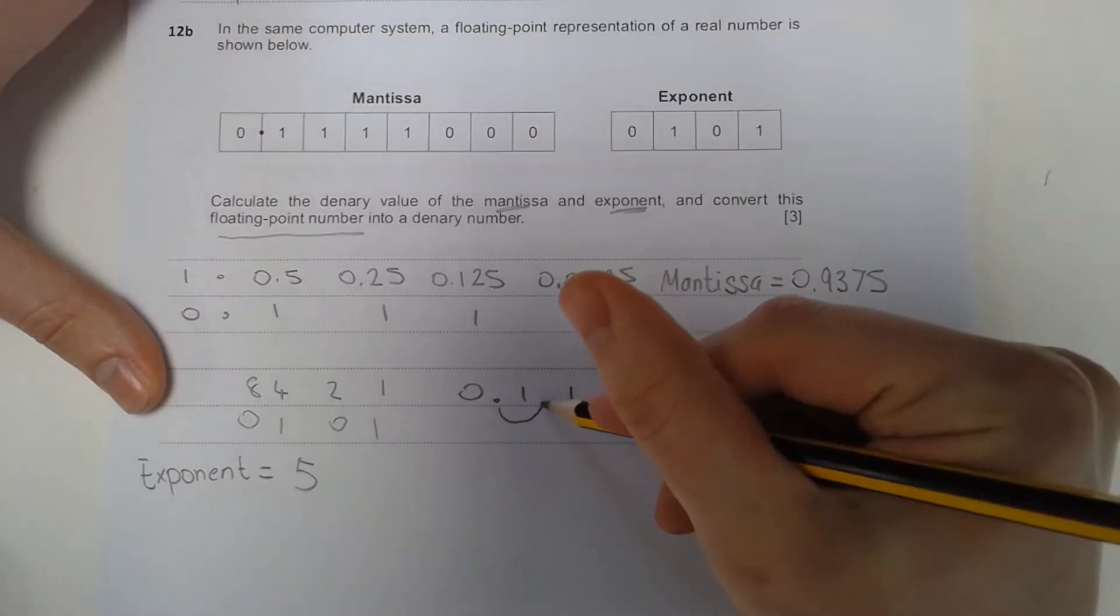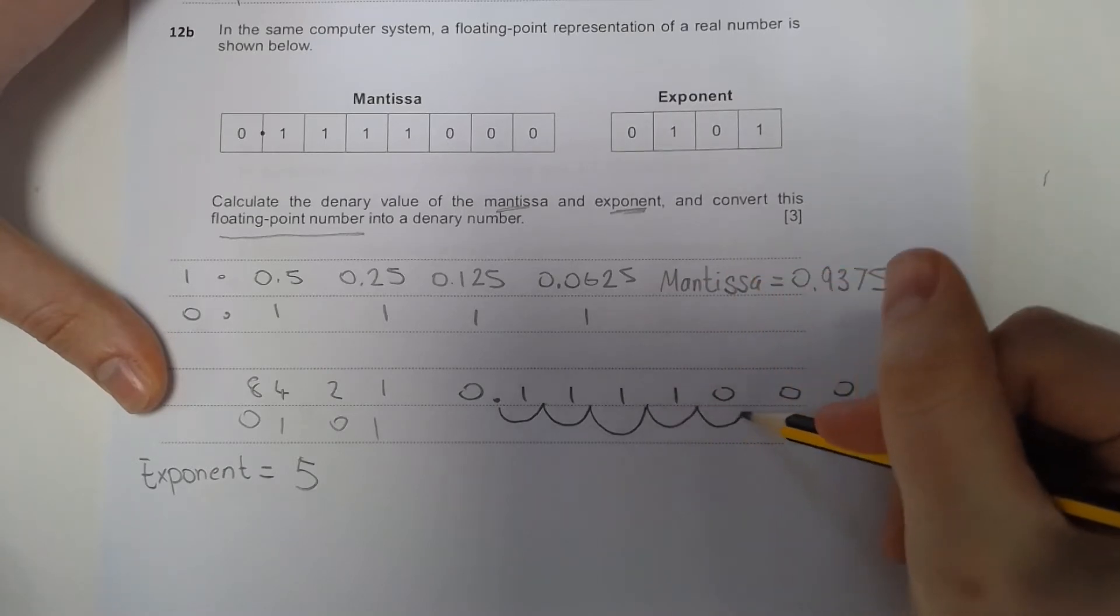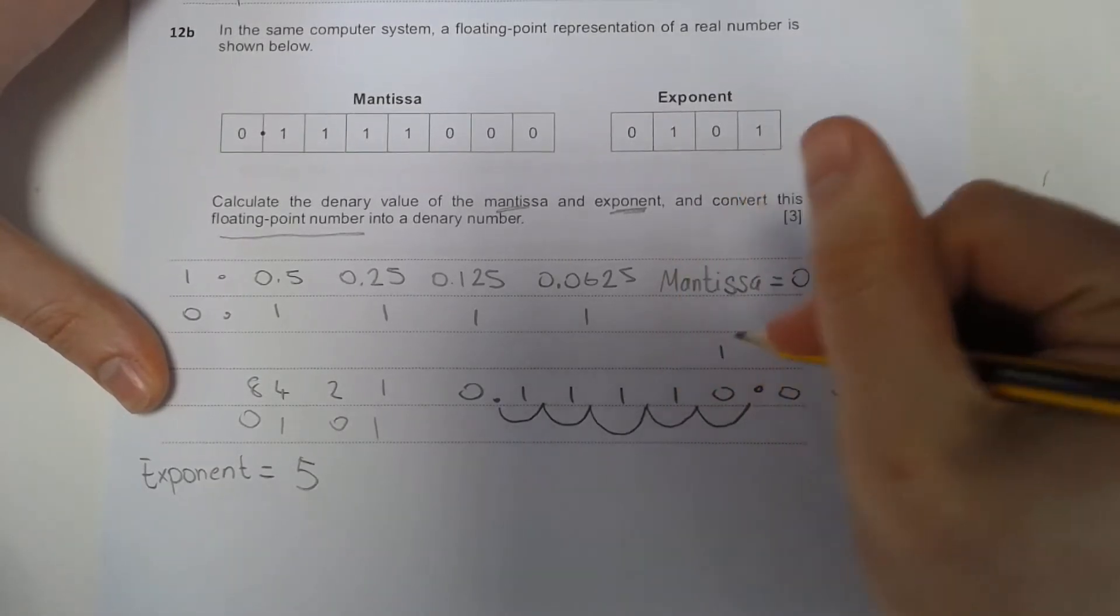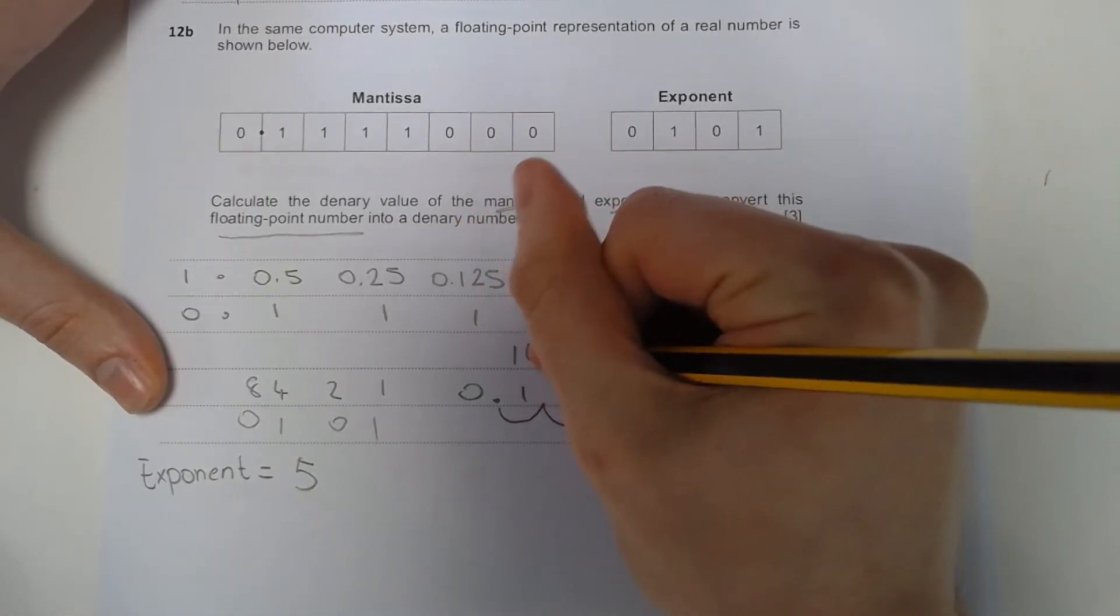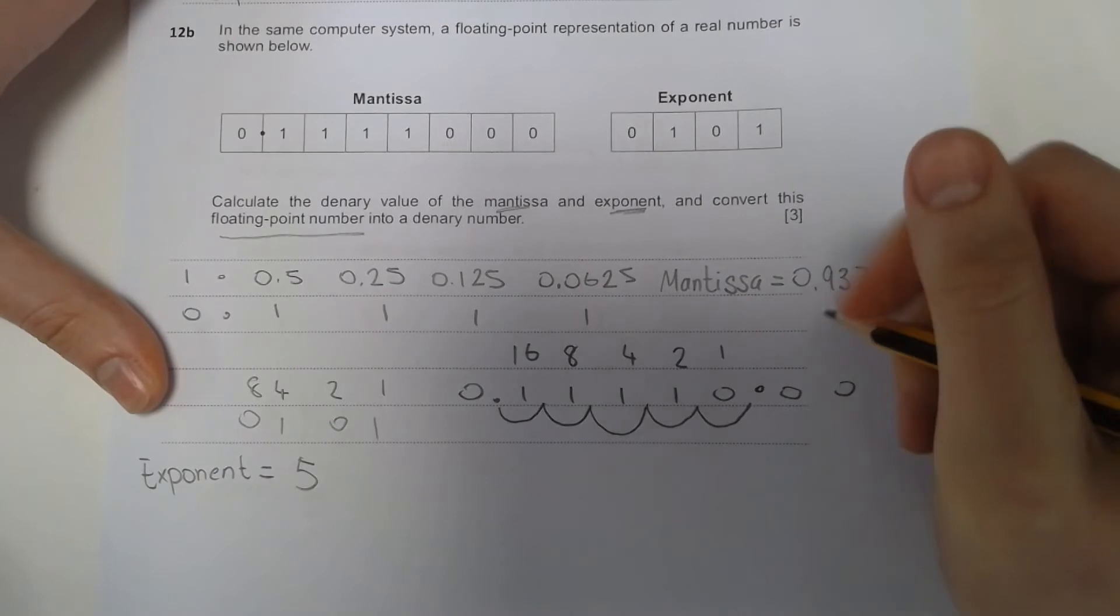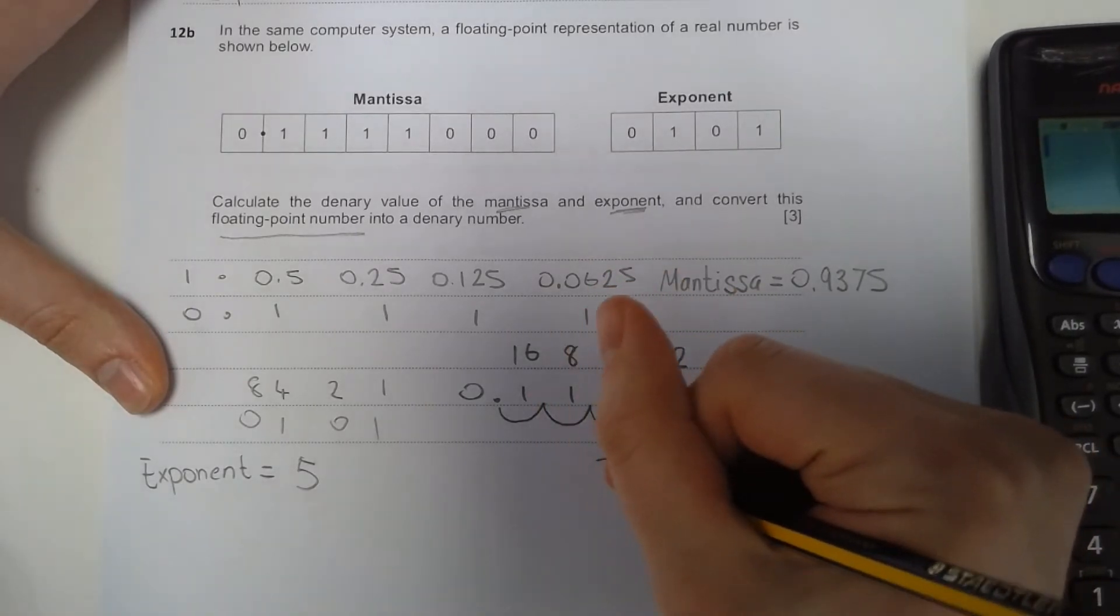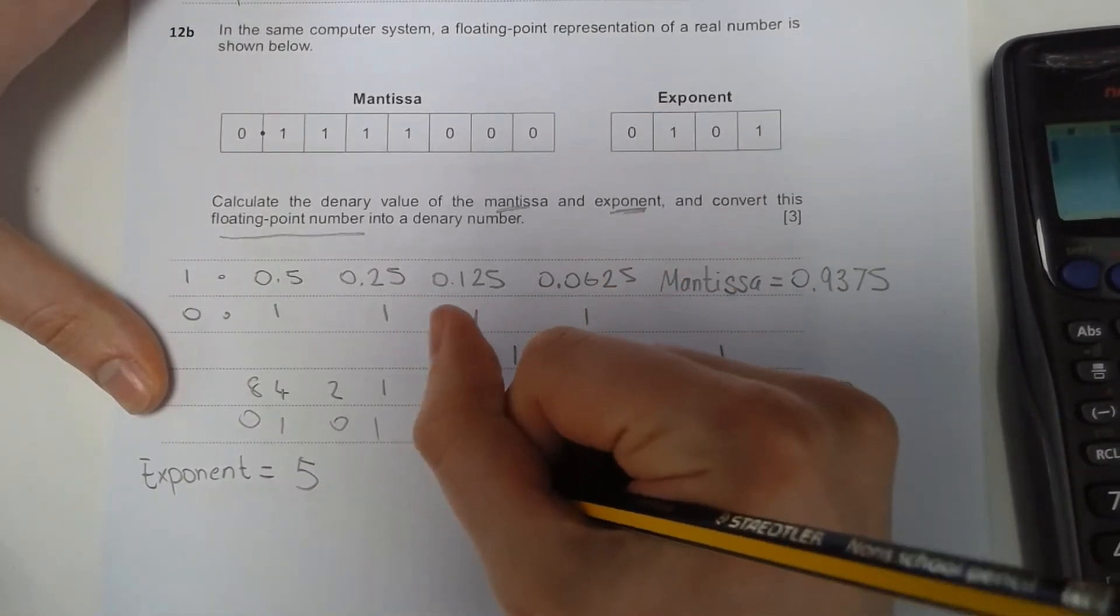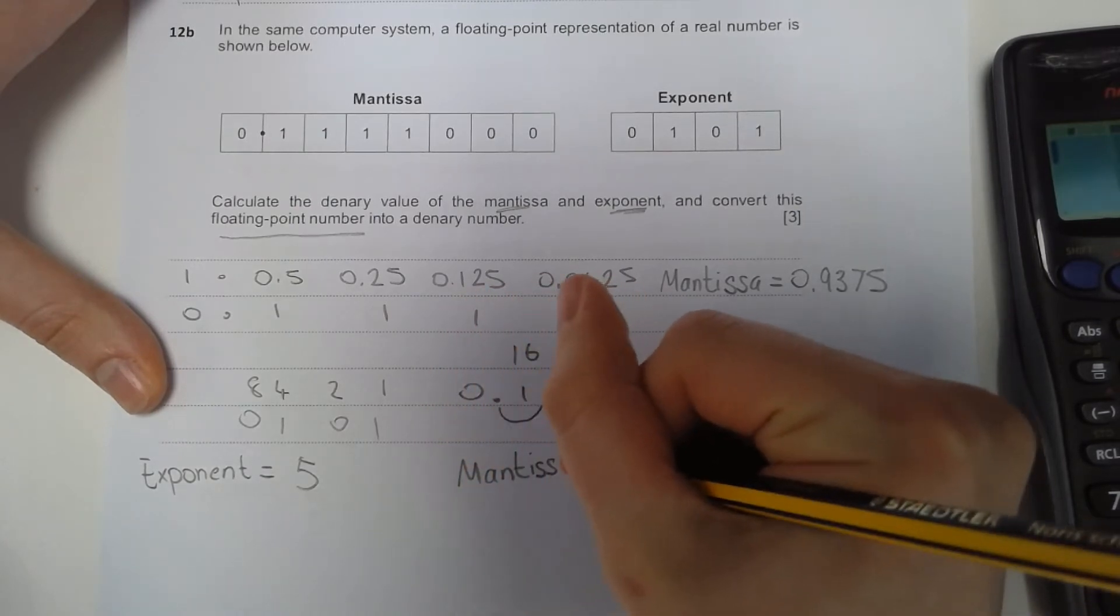We go 1, 2, 3, 4, 5. We'll go 1, 2, 4, 8, 16. When we add these values together, 16 add 8, 24, 28, 29, 30. So our mantissa should be equal to 30.